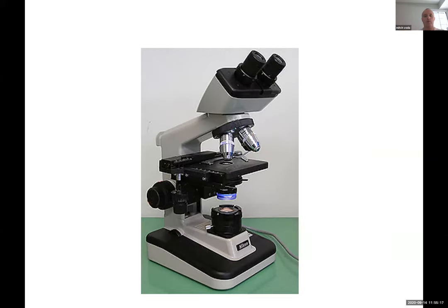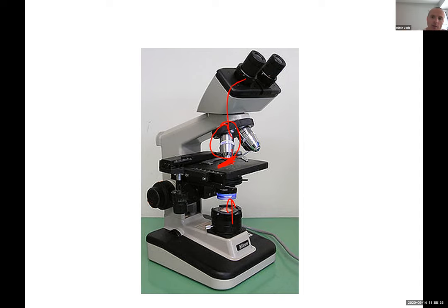For the compound microscope, light comes from the bottom, passes through the specimen on the stage, and these objectives align with the slide so you can collect information through the oculars. The dissecting microscope does not have this stage — the slide sits right there on the platform.